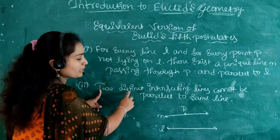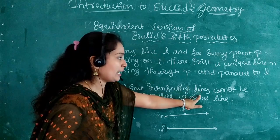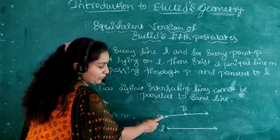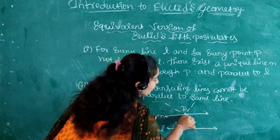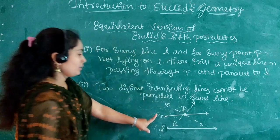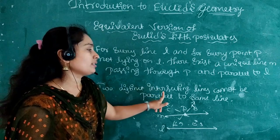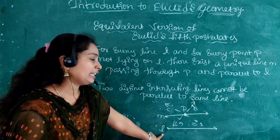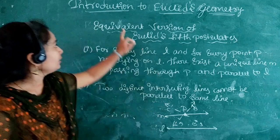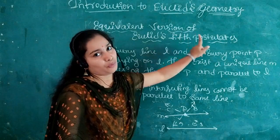The second part of the equivalent version: two distinct intersecting lines cannot be parallel to the same line. Lines AB and CD, or AB and CE are two distinct intersecting lines — they cannot both be parallel to L. This is the result of the equivalent version of Euclid's fifth postulate.